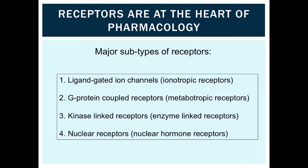The major subtypes of receptors are listed here. They include ligand-gated ion channels, also known as ionotropic receptors, G-protein coupled receptors, also known as metabotropic receptors, kinase-linked receptors or enzyme-linked receptors, and nuclear hormone receptors.